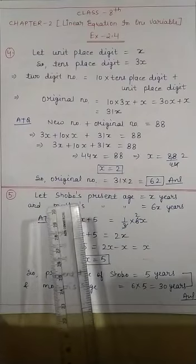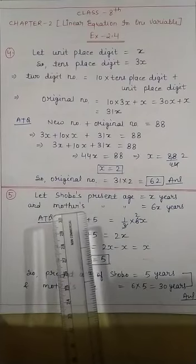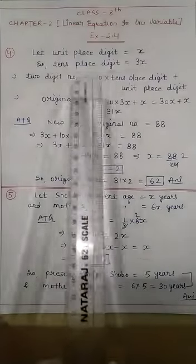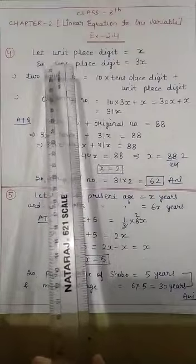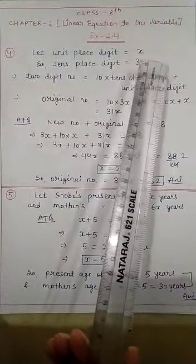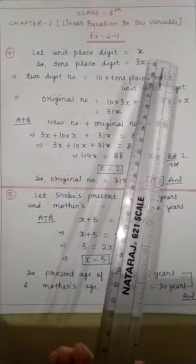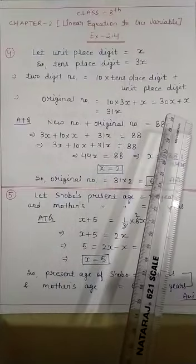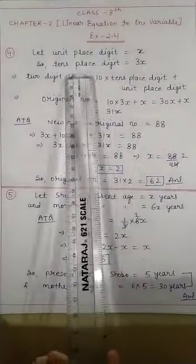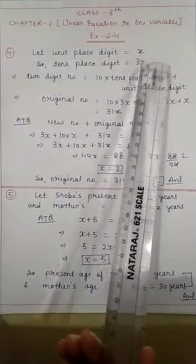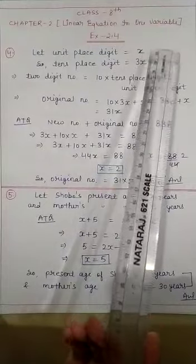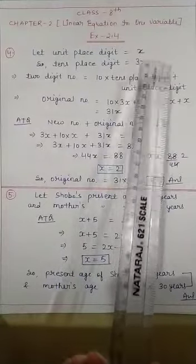So what do you have to do here? Find out the two digit number. First of all, from the first statement — one of the two digits is three times the other digit — so what is your tens place digit? Three times the unit place digit, i.e., 3x.